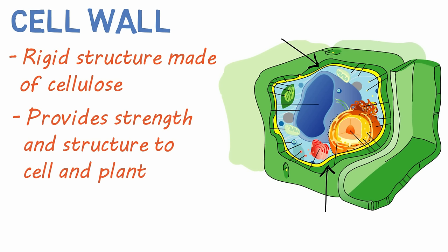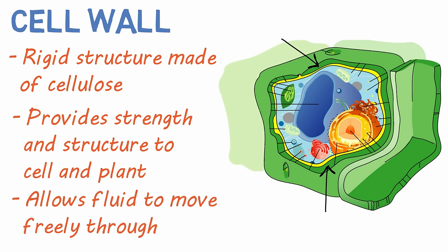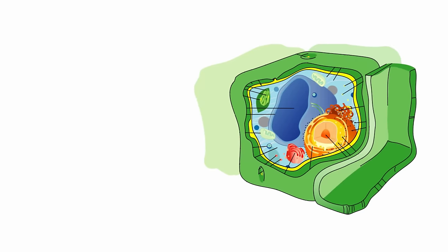The cell wall is also permeable, meaning it allows fluid to move freely through it. This is not the cell membrane, which is our next structure.